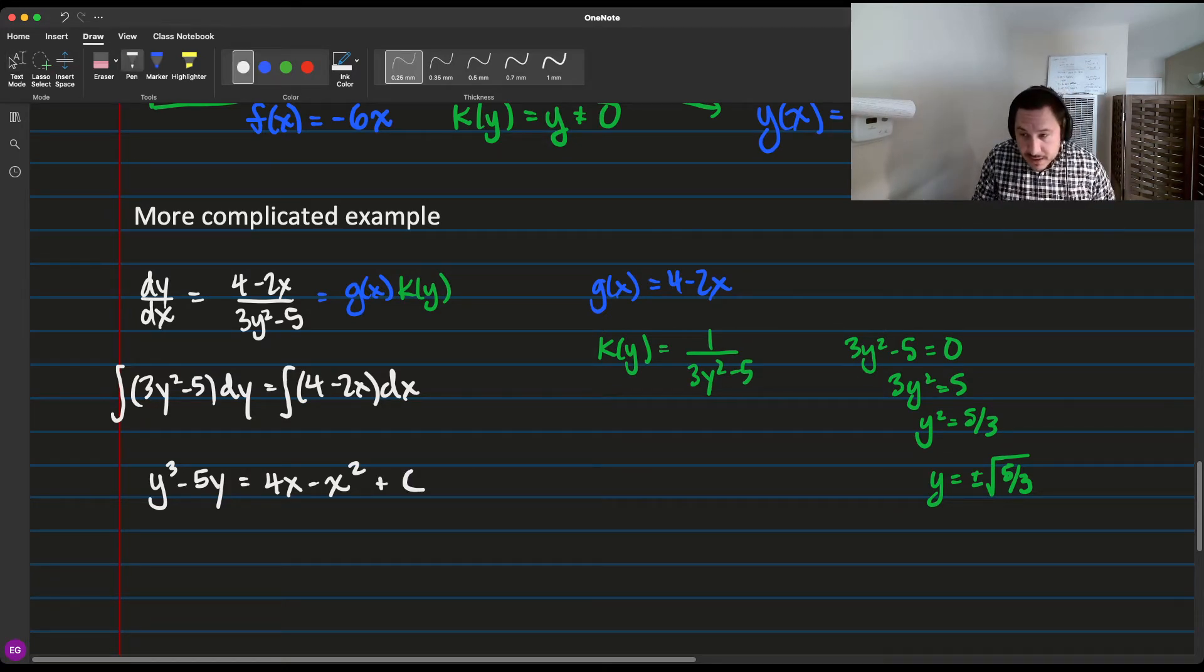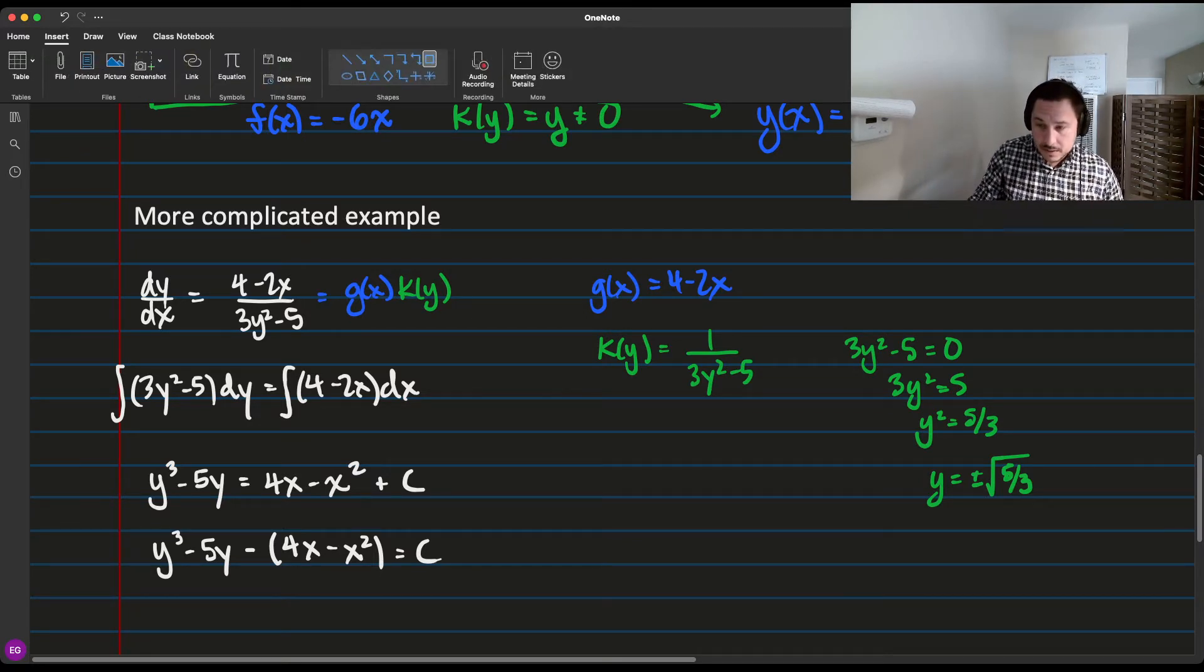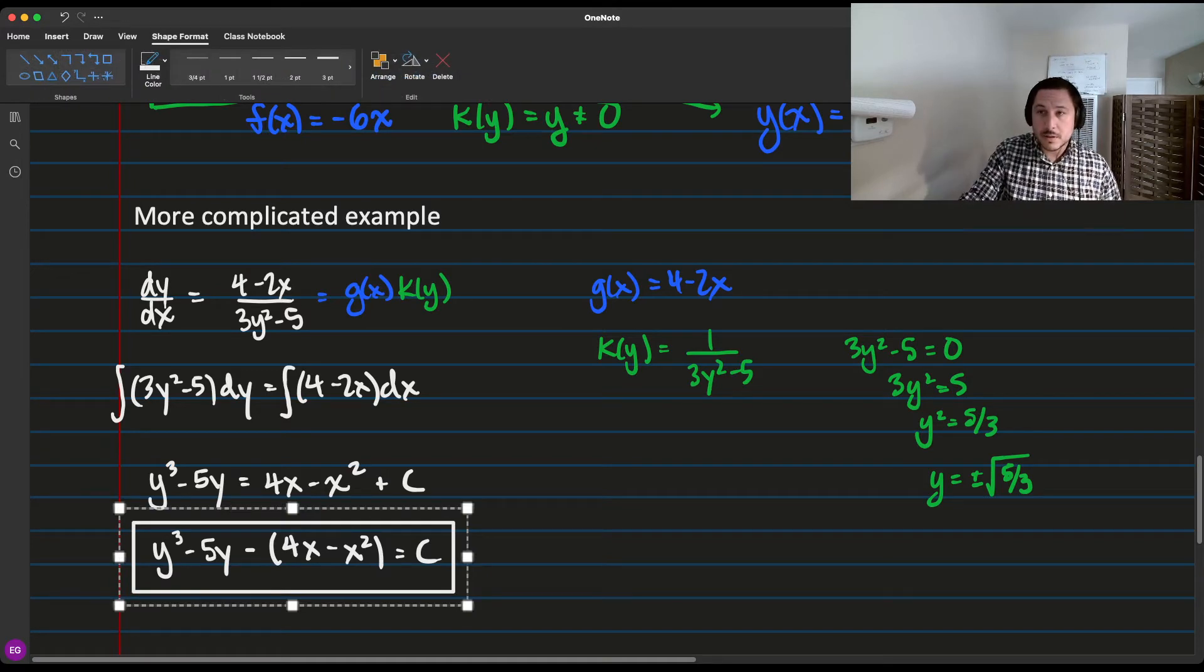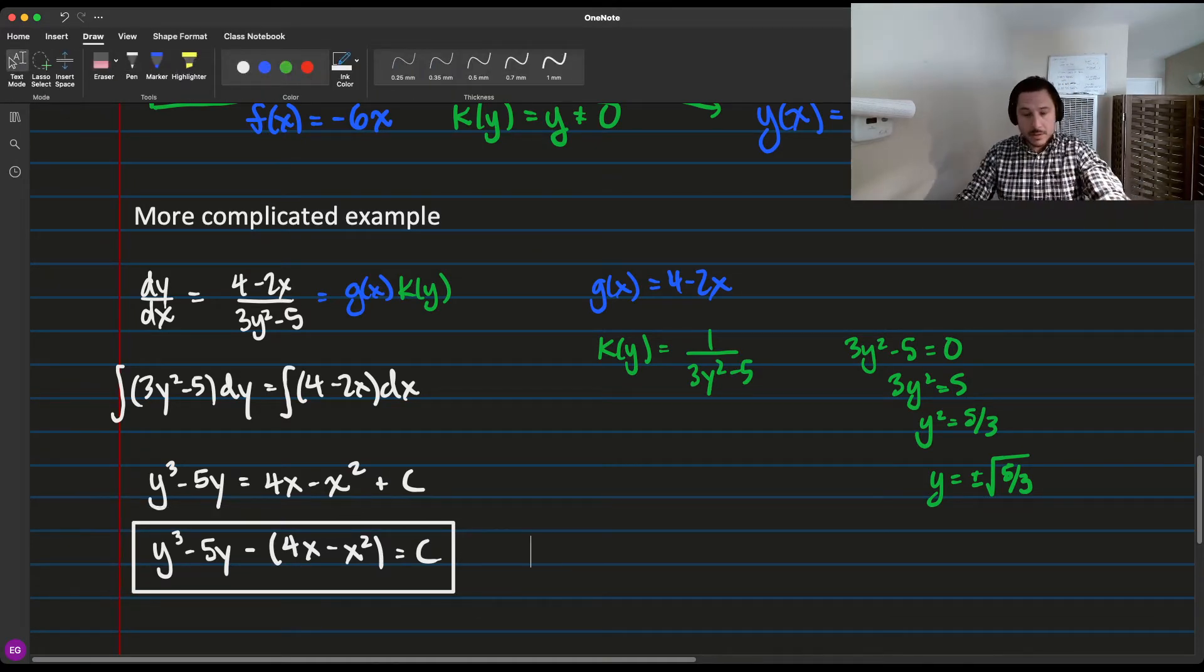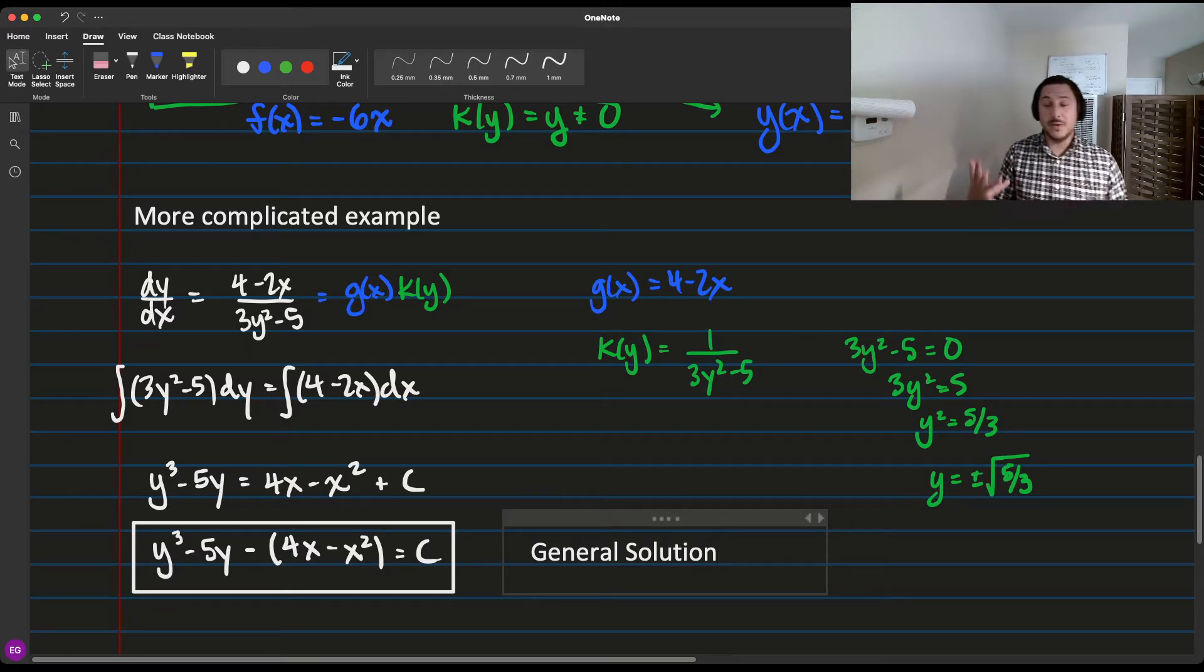So what you get here is we're going to move everything over. We're going to get y cubed minus 5y minus 4x minus x squared equals c. This is our general solution. You might not be familiar with this sort of equation. It's called an elliptic curve. It actually looks really weird.